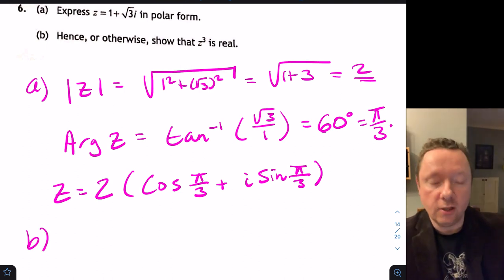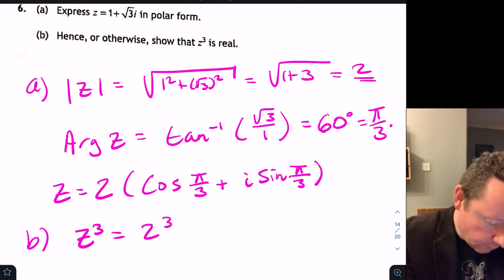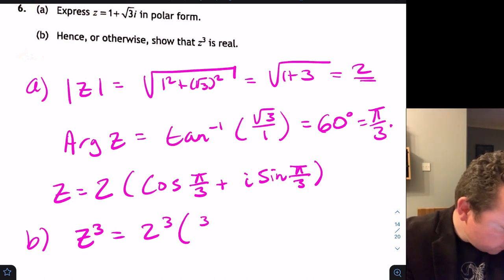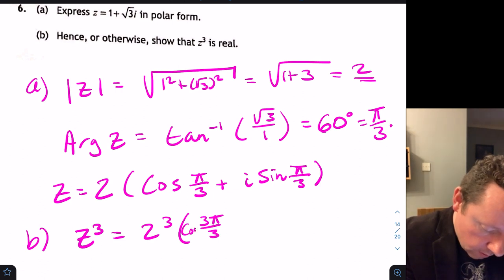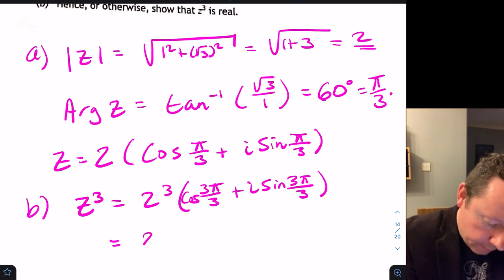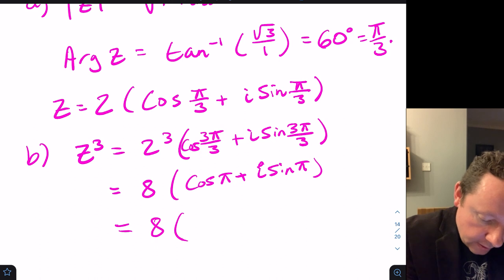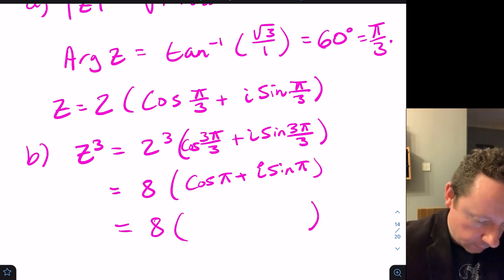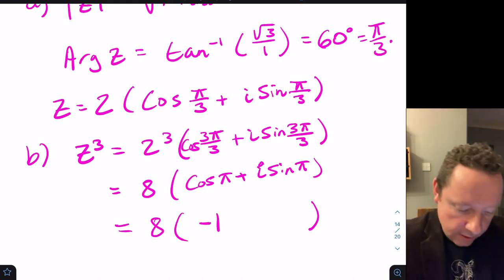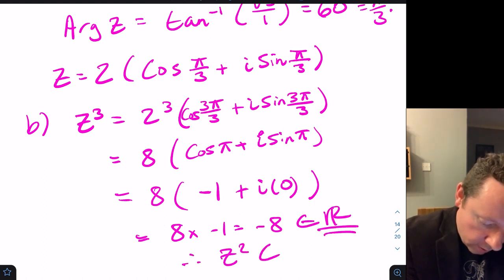Part B: show that z³ is real. Using De Moivre's theorem, z³ equals 2³(cos(3π/3) plus i·sin(3π/3)), which is 8(cos π plus i·sin π). Since cos π equals minus 1 and sin π equals 0, we get 8 times minus 1, which is minus 8 — a real number. Therefore z³ is a member of the real numbers.